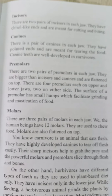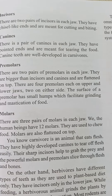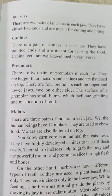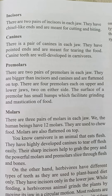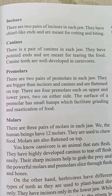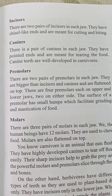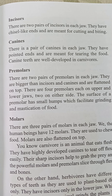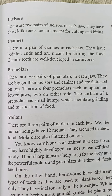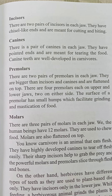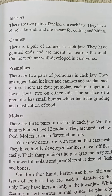Come to page number 19 and see the explanation of these teeth. Incisors: there are two pairs of incisors in each jaw. They have a chisel-like end and are meant for cutting and biting.